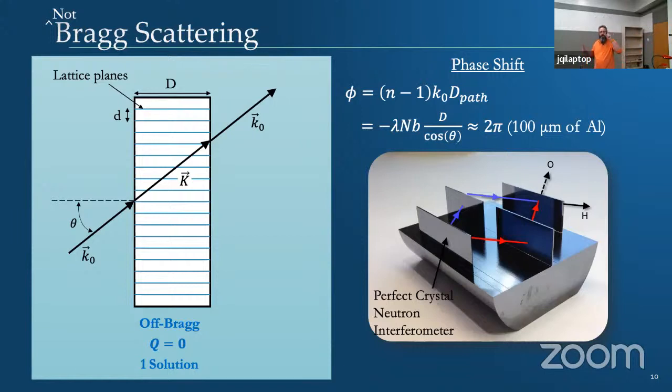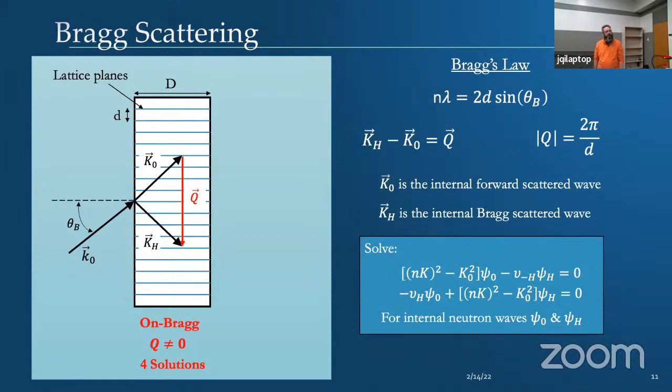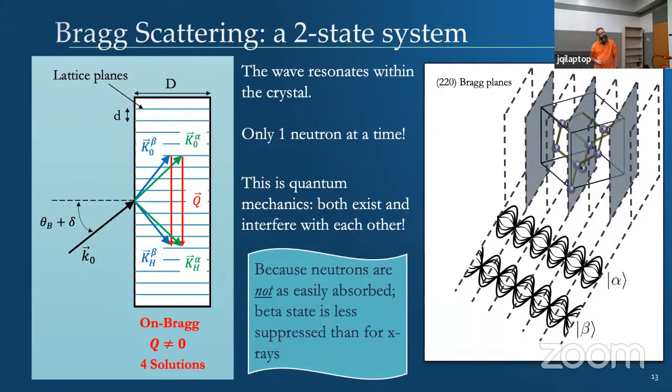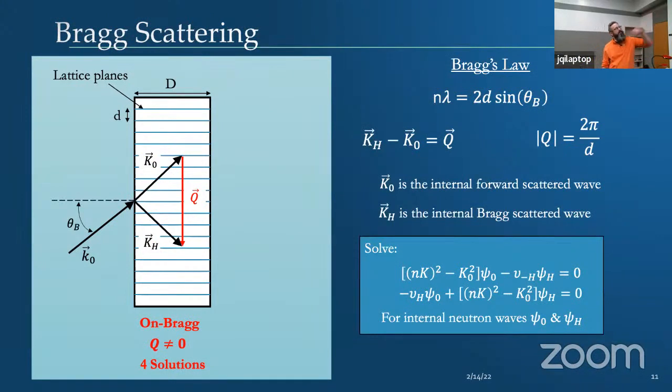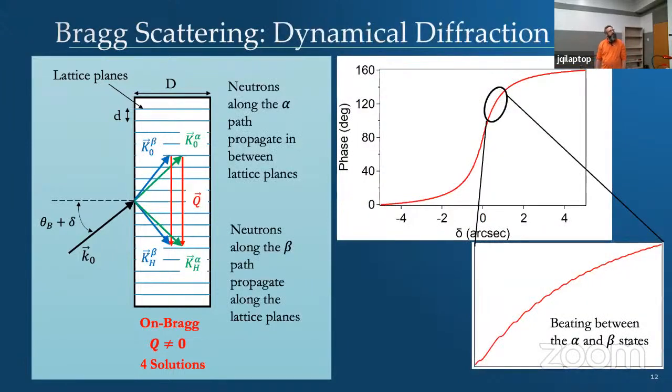What we're doing for pendulösung is a Bragg scattering experiment, because we want to study the interaction with respect to Q. If you're on Bragg, you can describe Bragg's law in two simple ways, either algebraically or vector. You have an internal wave vector k naught, you have a diffracted vector kh, and you have a relationship given by your Hamiltonian of two equations that you have to solve for. Because those equations contain squared terms, you actually get not two solutions, but you get four solutions.